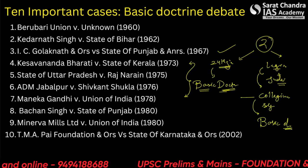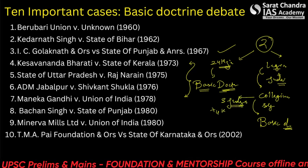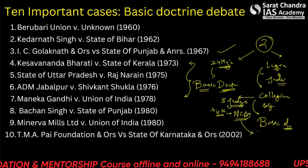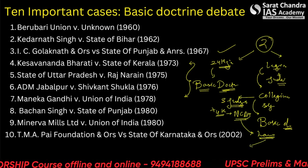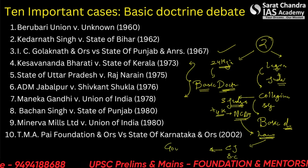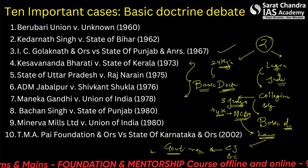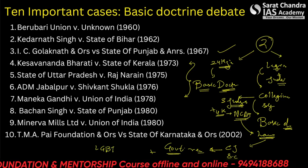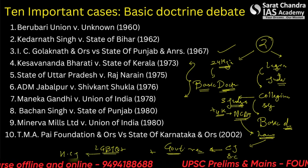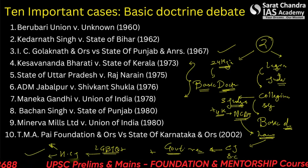We have already covered the collegium system, the three judges cases, and the four judges cases of 2015. Very recently the law ministry has written to the Chief Justice of the Supreme Court, D.Y. Chandrachud, in order to include the government's representation in the selection or appointment of judges. There has also been a case of an LGBTQ+ lawyer being appointed as a high court judge and the problems and issues related with that. So these are the reasons this video is being released.